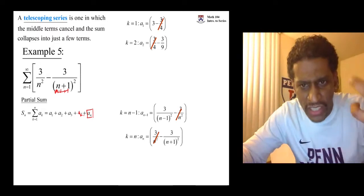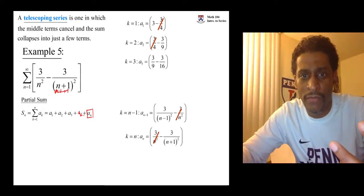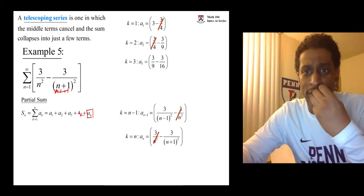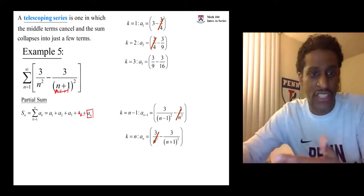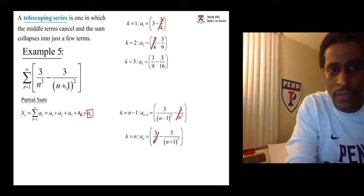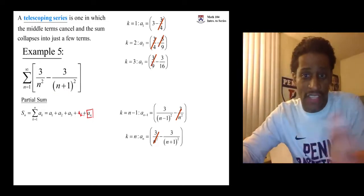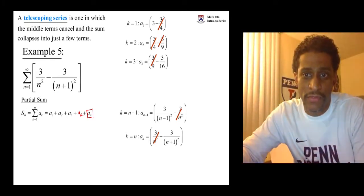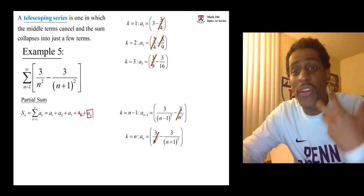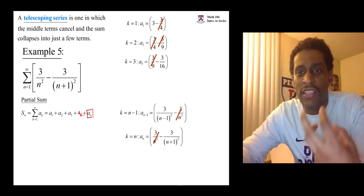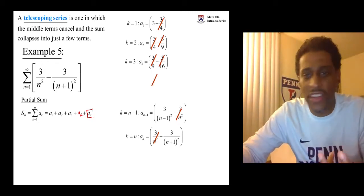You don't have to write this, but let's look at the third term. k equals 3. It starts with 3 ninths and has a minus 3 sixteenths. So the 3 ninths and the minus 3 ninths cancel. We're not going to write the next term, but we know what's going to happen. The negative 3 sixteenths and the 3 sixteenths are going to cancel.